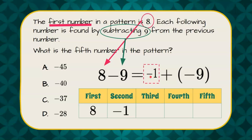Now I'm going to come back up here and I'm going to take my second number, negative 1, and I'm going to add negative 9, which is subtracting 9, giving me negative 10. Negative 1 and negative 9 are negative 10.